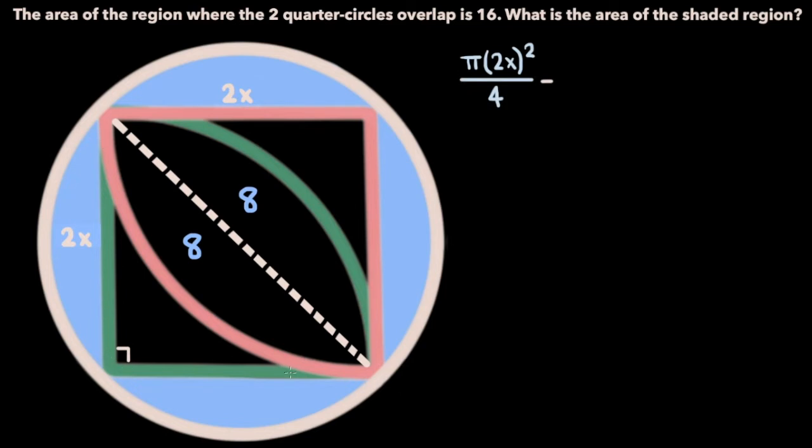minus the area of this right triangle, which is going to be base times height over 2. The base is 2x and the height is 2x, so we have 2x times 2x divided by 2. And we know that this expression, which gives us the area of one of the halves of this overlapping region, is equal to 8.